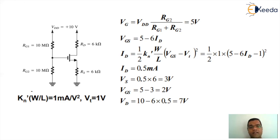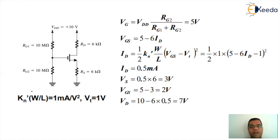With ID equal to 0.5 mA, the value of VS is ID·RS which gives 3 V. VGS equals VG minus VS, so VGS equals 5 minus 3 equals 2 V. The drain node voltage VD equals VDD minus ID·RD. With VDD equal to 10 V, RD equal to 6 kΩ, and ID equal to 0.5 mA, VD equals 10 minus 6×0.5 equals 7 V.